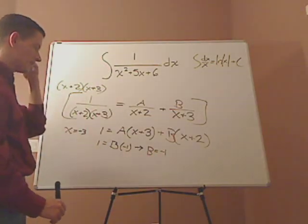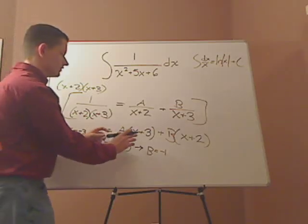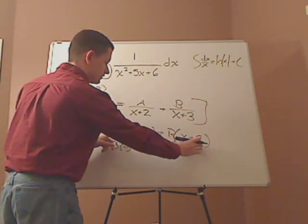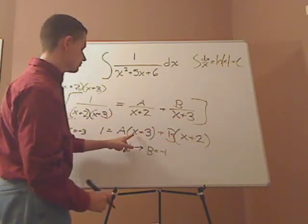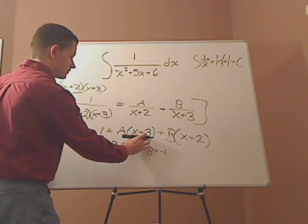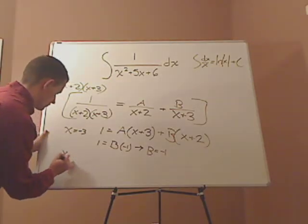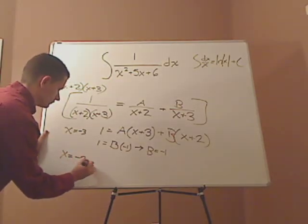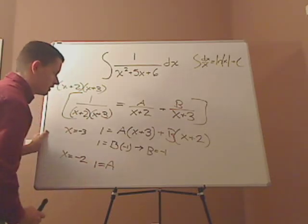Now I want to do the same thing with A, so I don't want the A to cancel out, I want this guy to cancel out. So I'm going to plug in negative 2. When I plug in negative 2 this cancels out, negative 2 plus 3 is 1. So A equals 1.